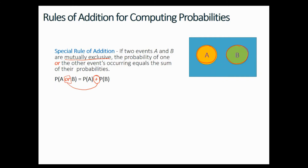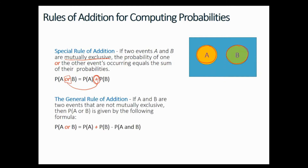The second rule is the general rule of addition. If A and B are two events that are not mutually exclusive, then the probability of A or B is given by the formula: P(A or B) = P(A) + P(B) − P(A and B).